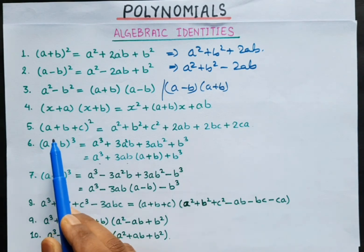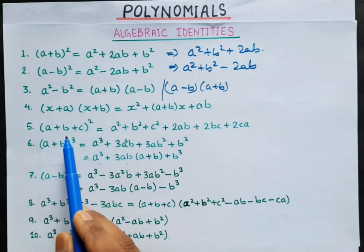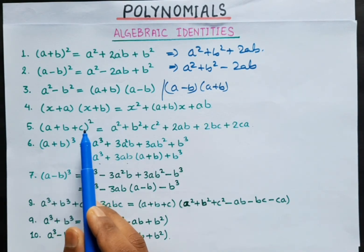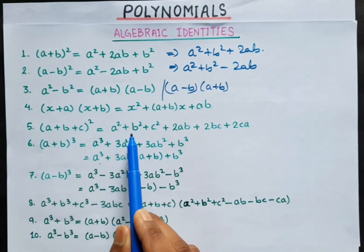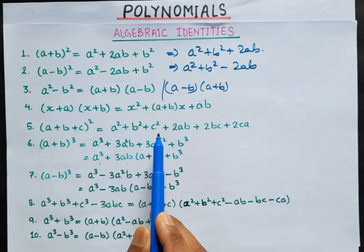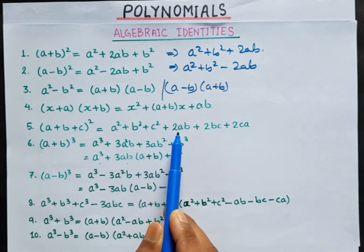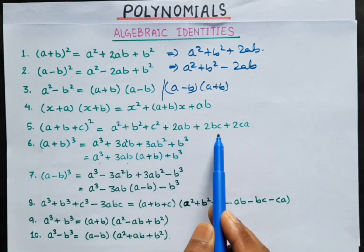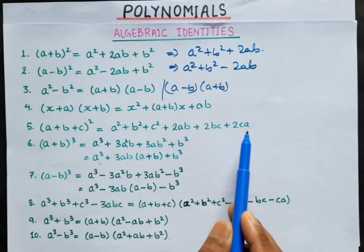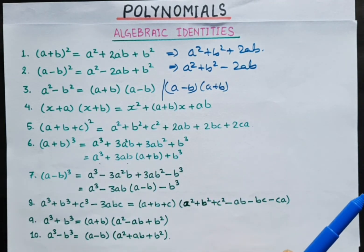Next, identity 5 is (a + b + c) whole square, which is equal to a squared plus b squared plus c squared plus 2ab plus 2bc plus 2ca. Okay?